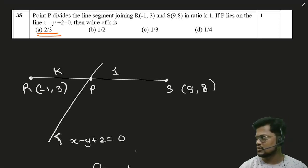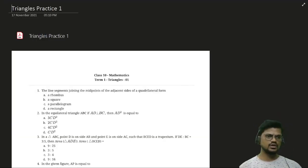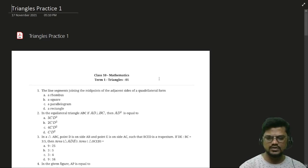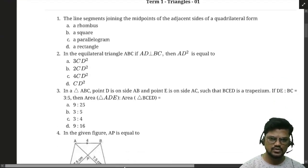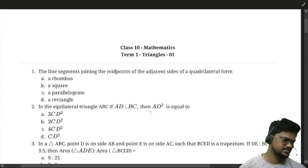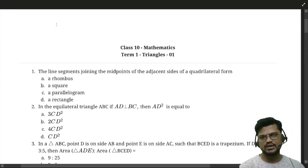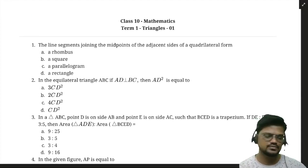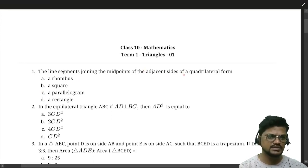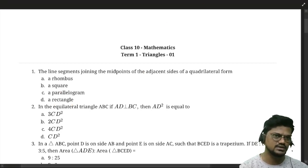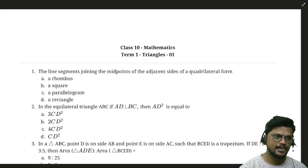Good evening everyone, please turn on your video before we start the class. This is one of the practice sheets for triangles — we will be solving this today. For the first question: the line segment joining the midpoints of the adjacent sides of a quadrilateral forms what — rhombus, square, parallelogram, or rectangle? You can answer in the chat box.